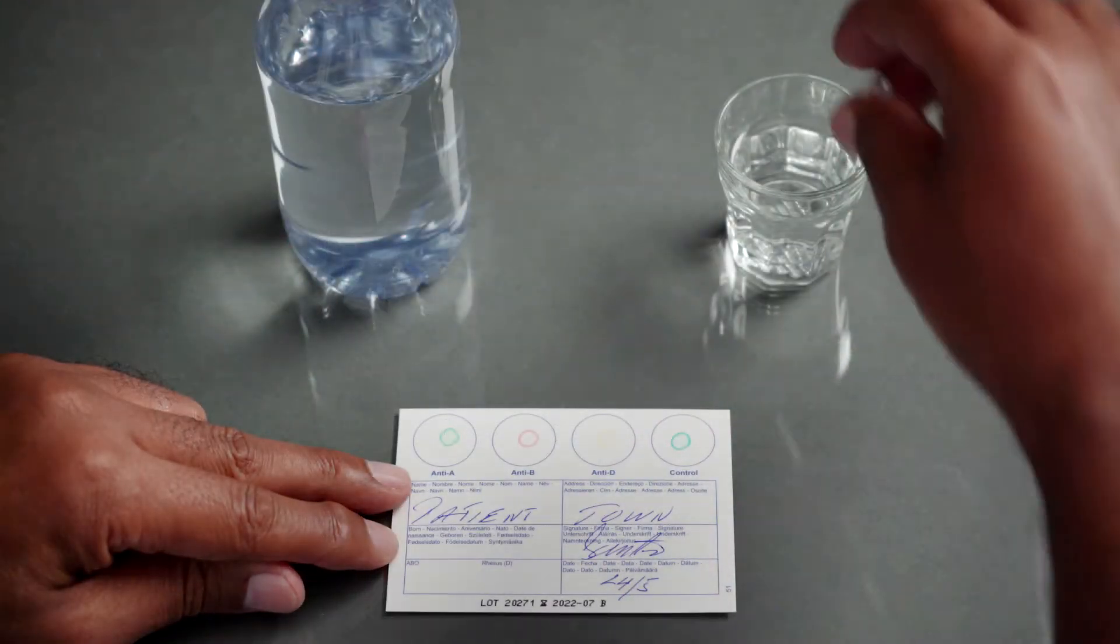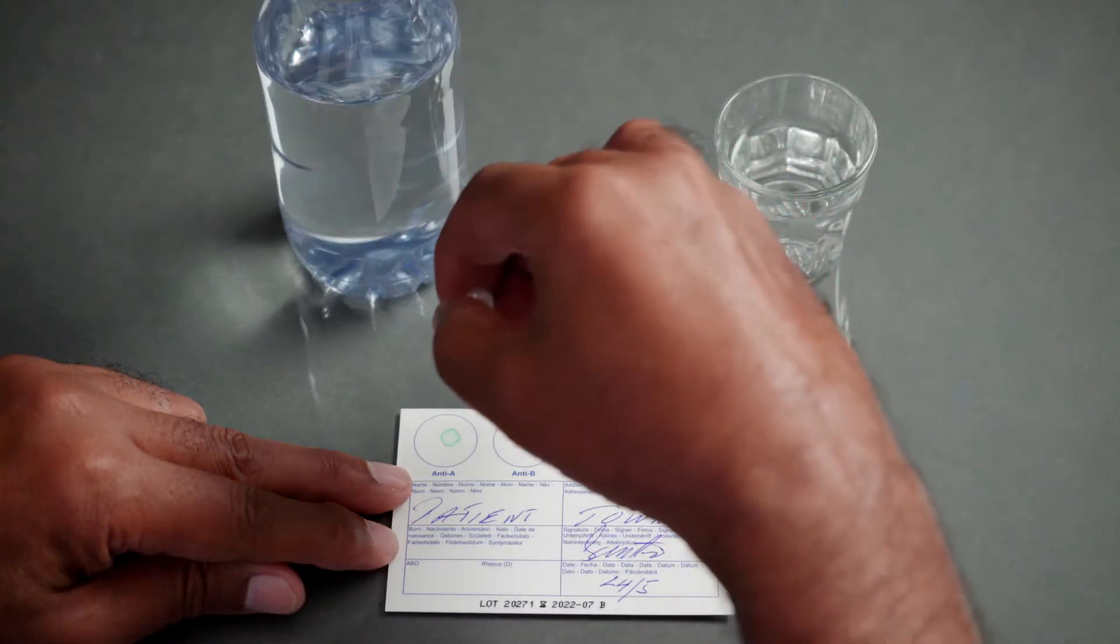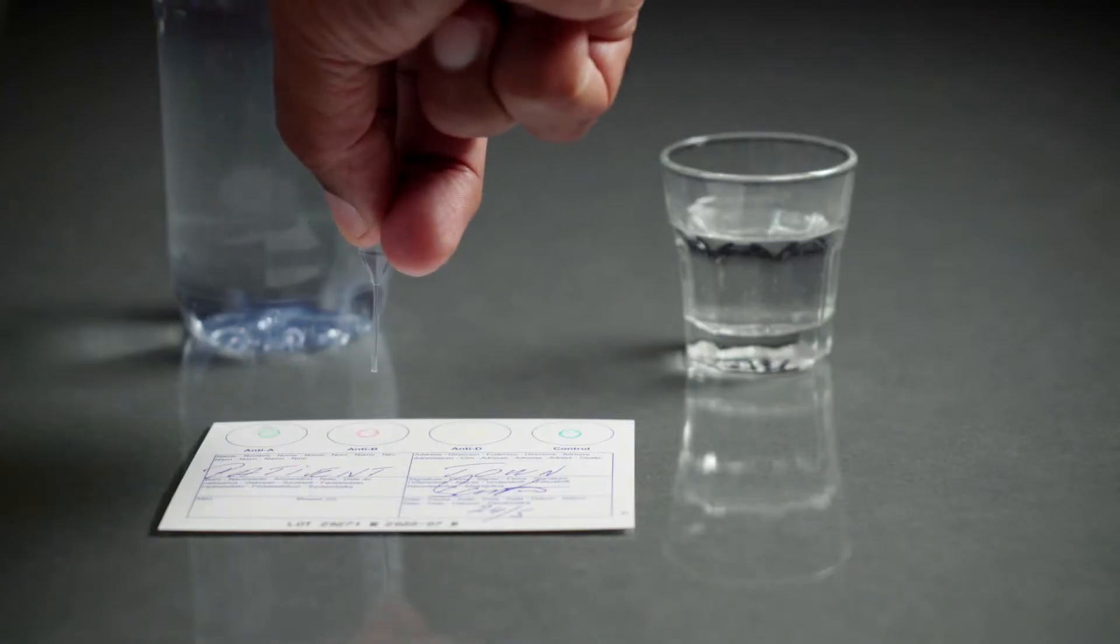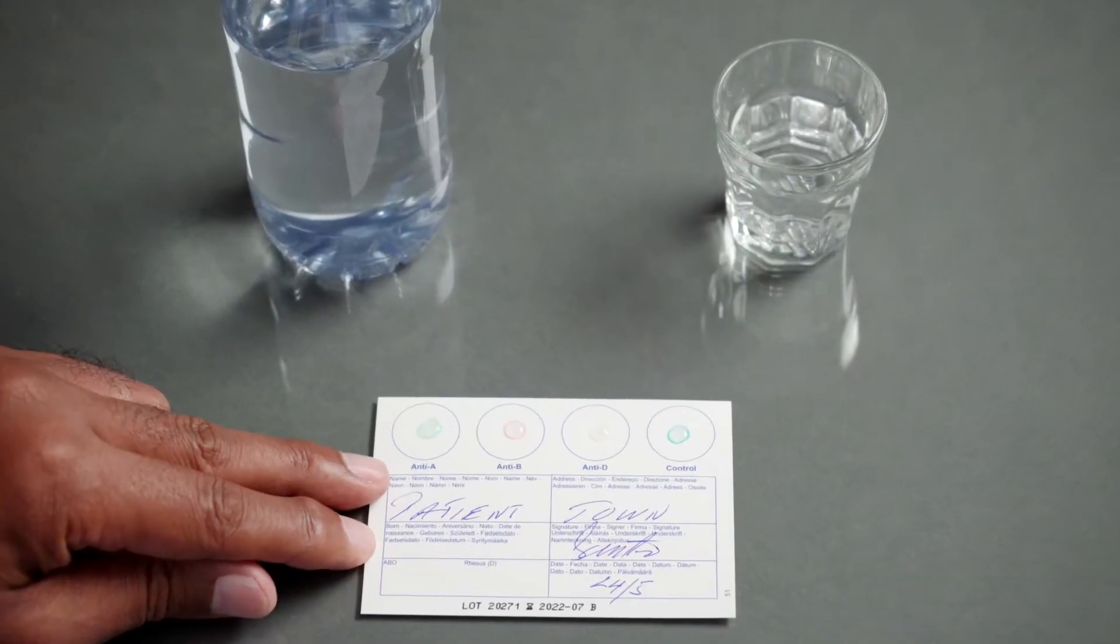Apply one drop of water directly upon the colored reagent spots of each circle. Don't touch the colored reagents with the pipette. Take care to avoid any mixing between circles.